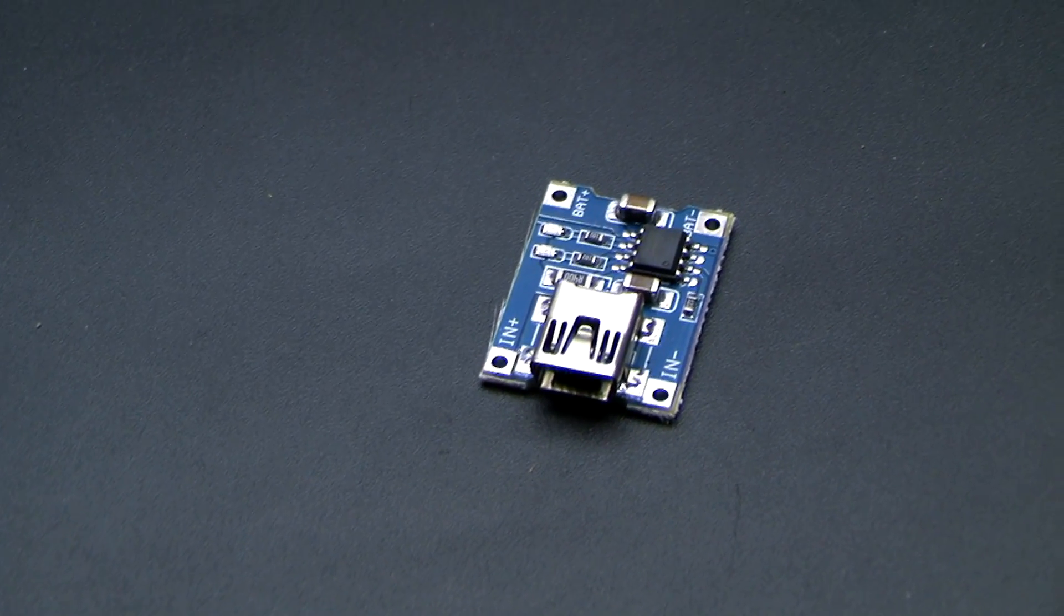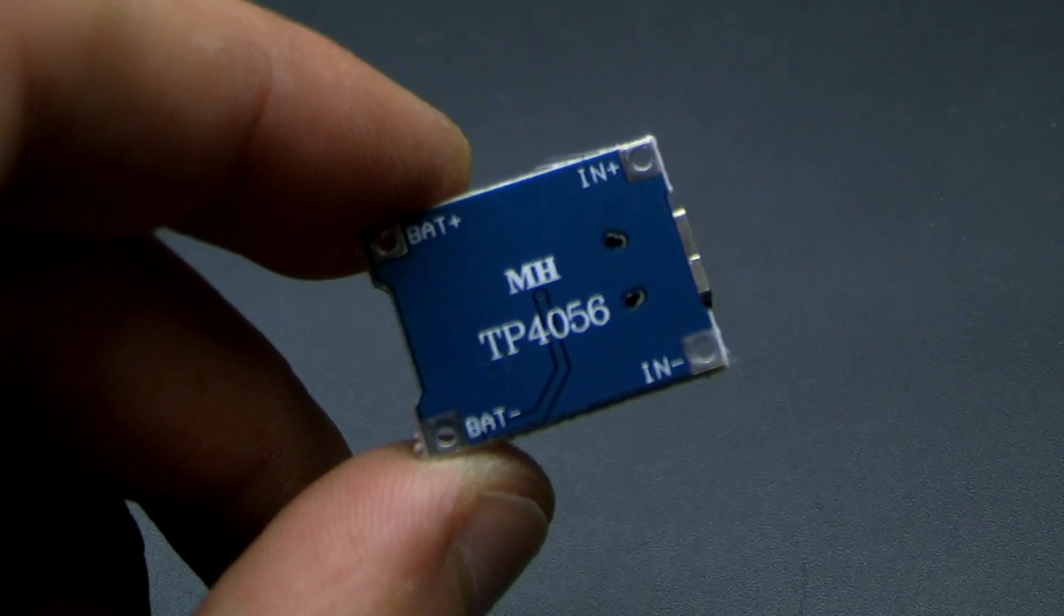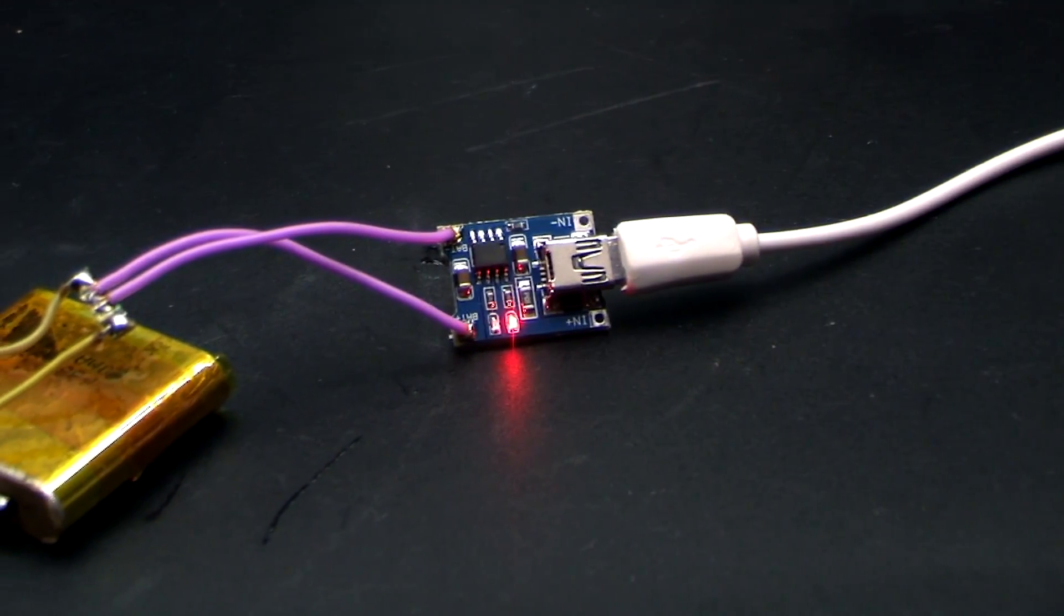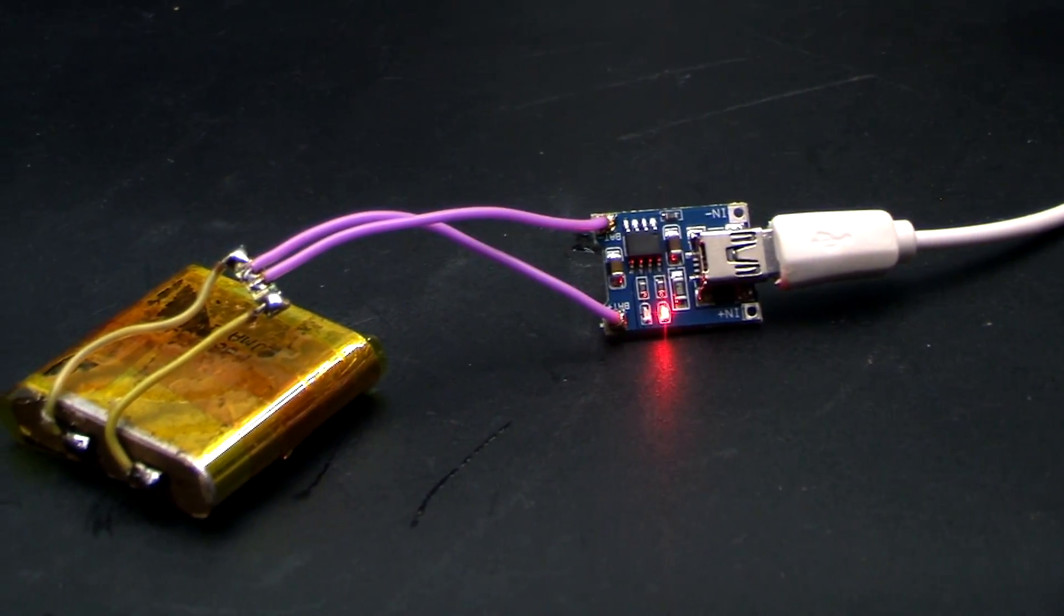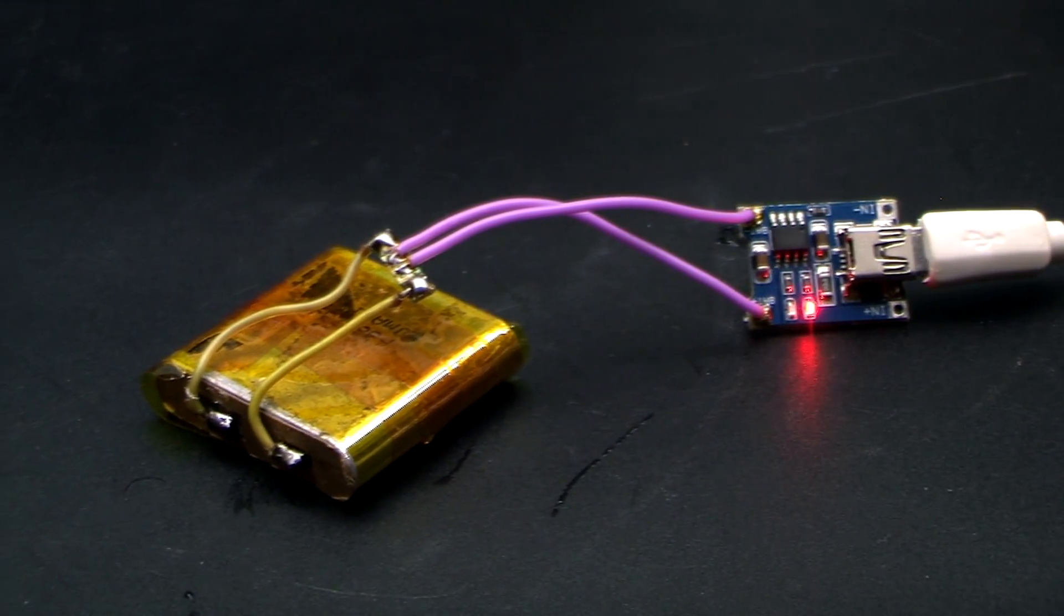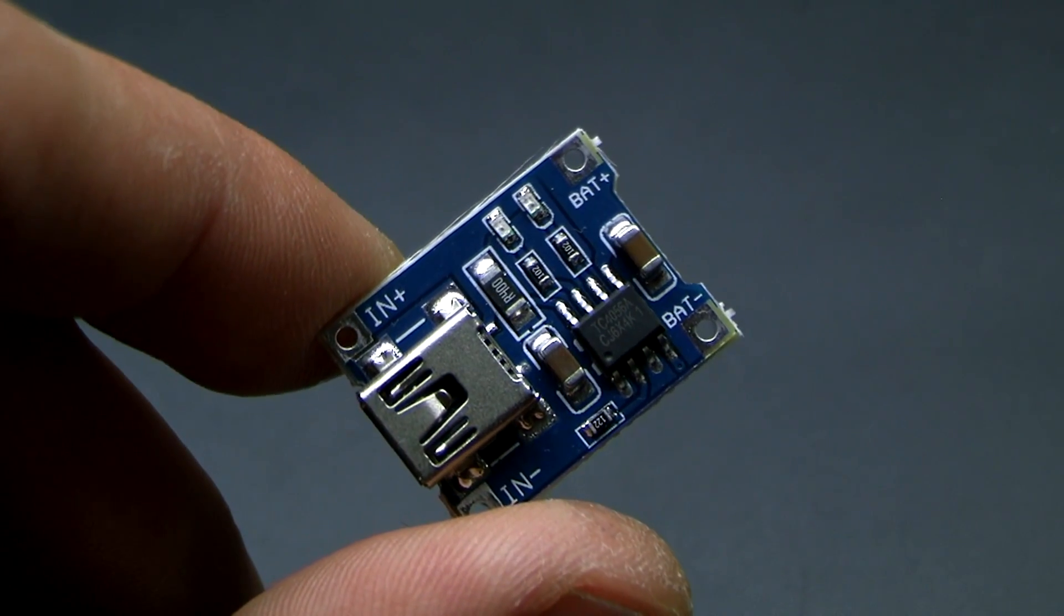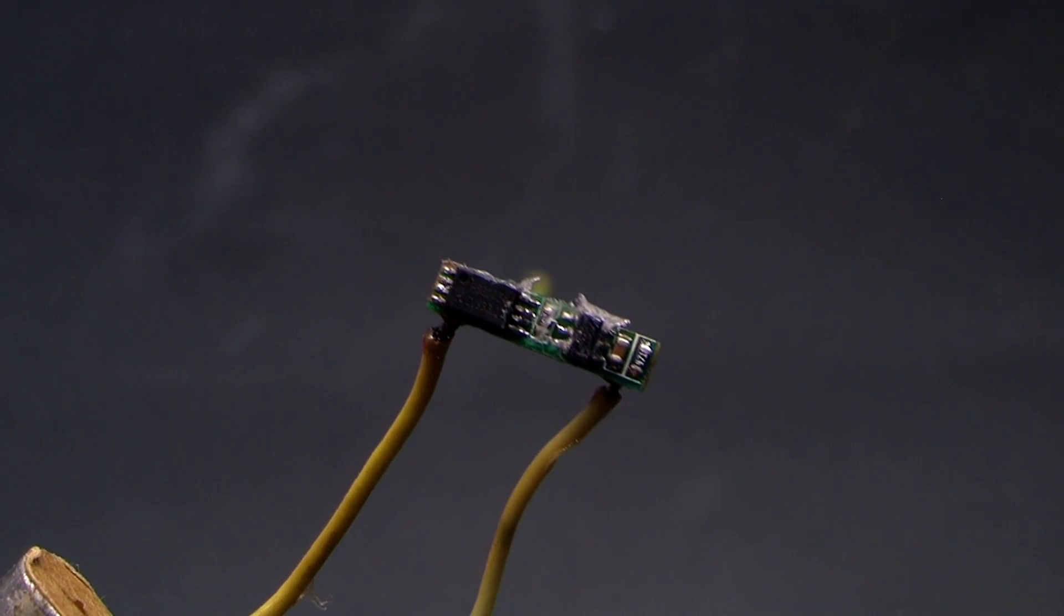The charge system is based off the TP4056 chip. You can't think of a better option. There's everything you need, a charge indication and a micro USB port. The maximum charge current is 1 Amp. Here is used the board without protection circuit, since the battery itself has protection.